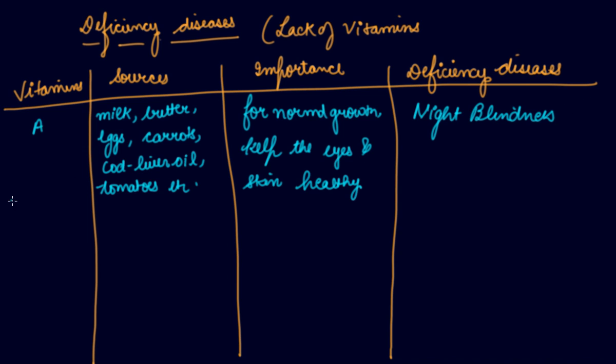Vitamin C - the major sources are amla, green leafy vegetables, and citrus fruits like oranges and lemons.